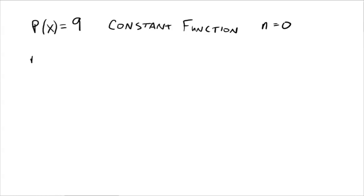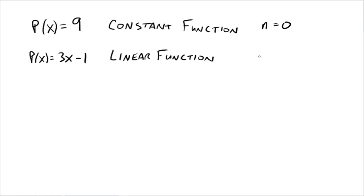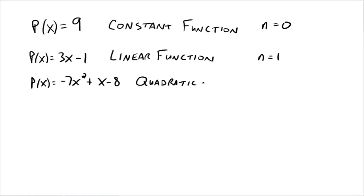We also have things like P of x equals 3x minus 1. This would be a linear function — you've all worked with linear functions before. The degree n on this polynomial is 1. And then we've seen things like negative 7x squared plus x minus 8. This is a quadratic function, and the degree n is 2.